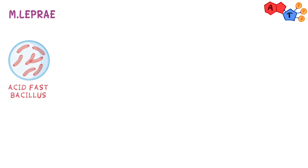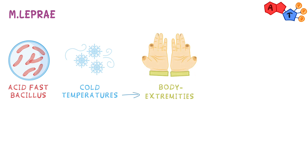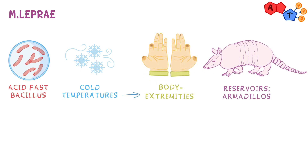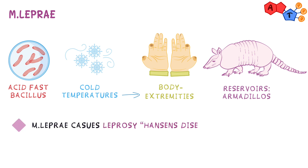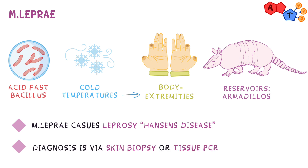Mycobacterium leprae is an acid-fast bacillus that likes cold temperatures. That explains its predilection for extremities of the body. Armadillos are a major reservoir for it. It causes leprosy, which is also commonly known as Hansen's disease. Diagnosis is usually via skin biopsy or tissue PCR — PCR stands for polymerase chain reaction.